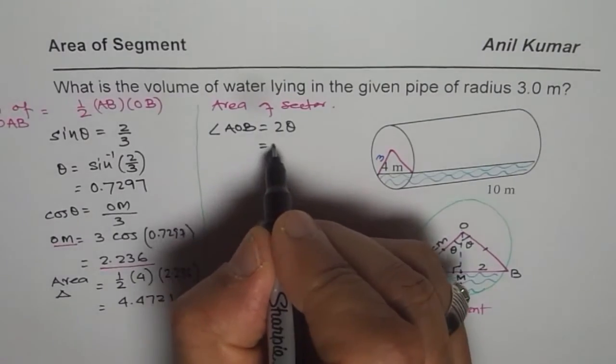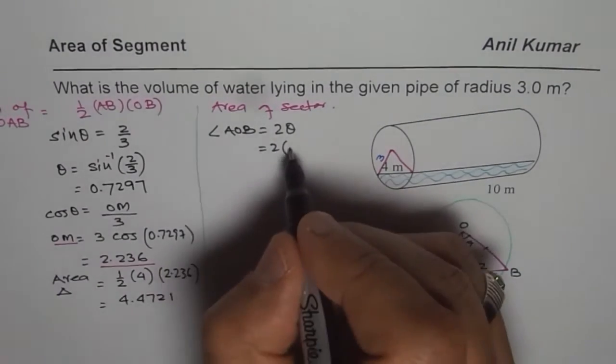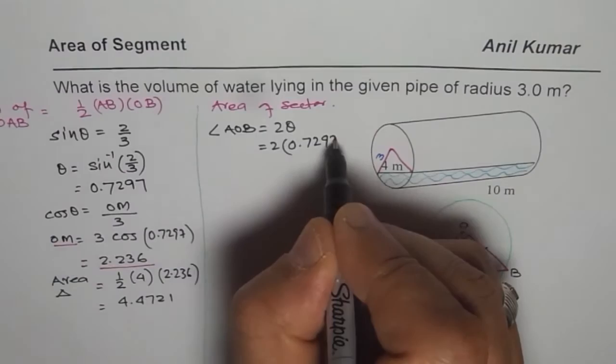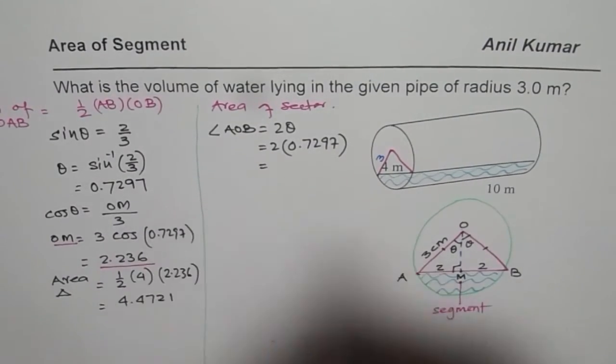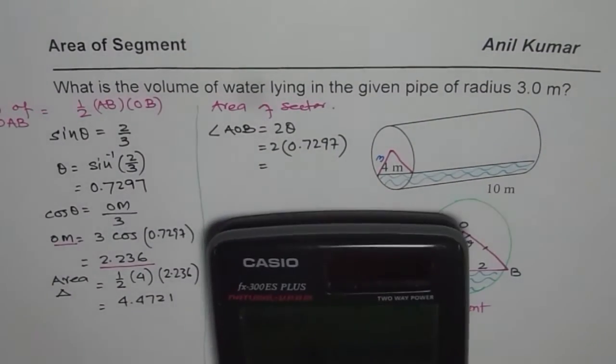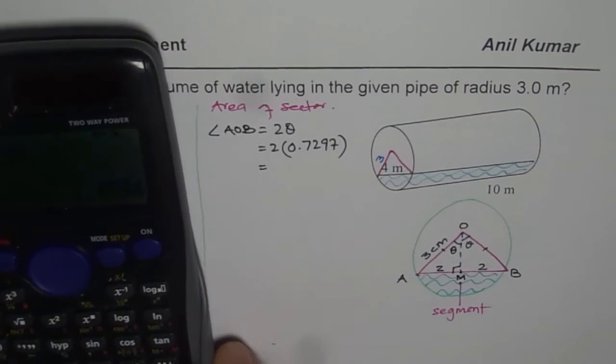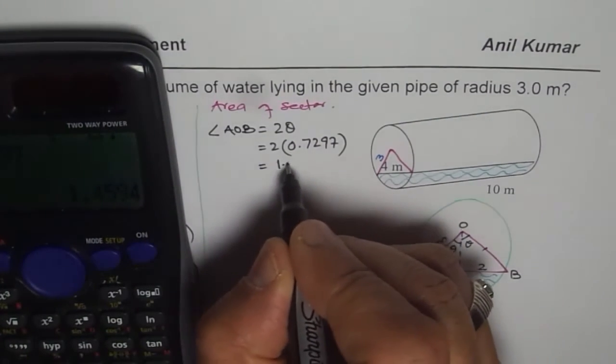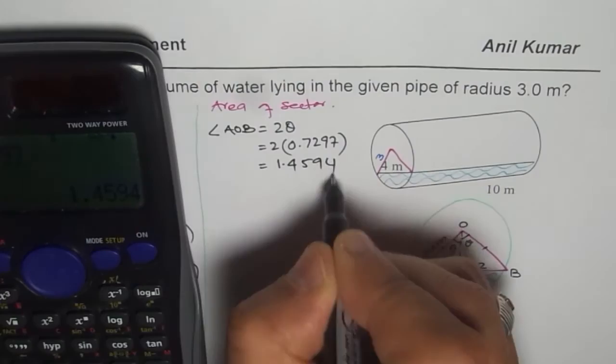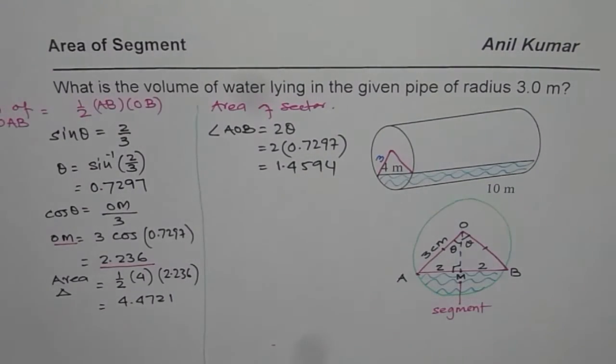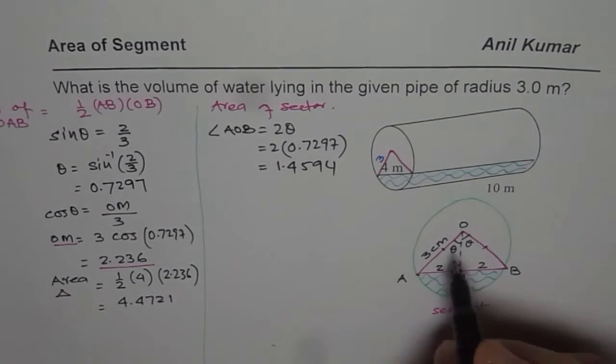So that is 2 times, we just found, 0.7297, in radians. All these calculations are in radians. We will do 2 times 0.7297 equals 1.4594. Use 4 decimal places, that will be good for you. So we know the angle now.